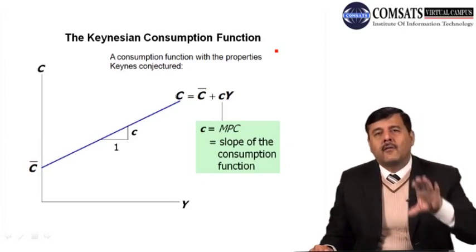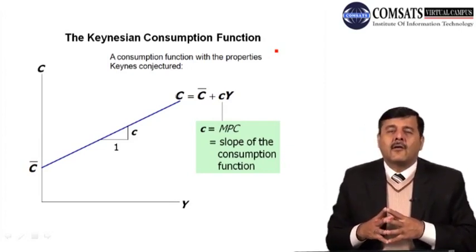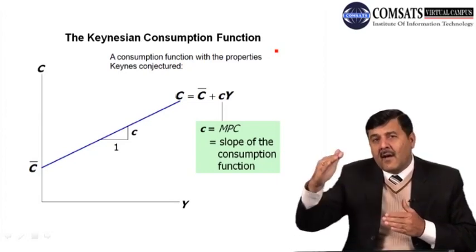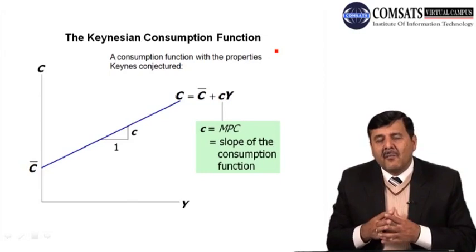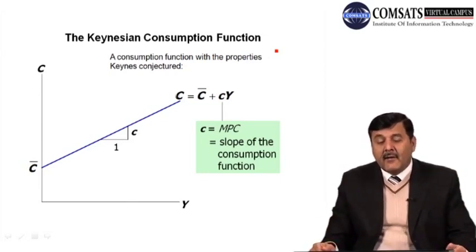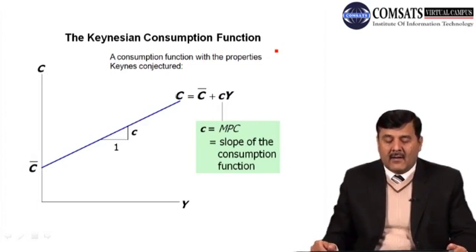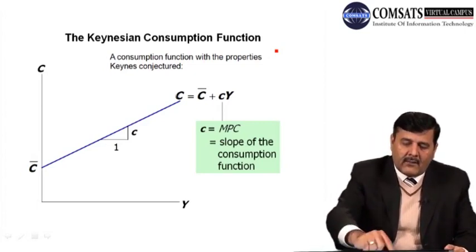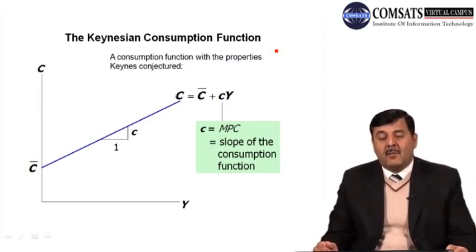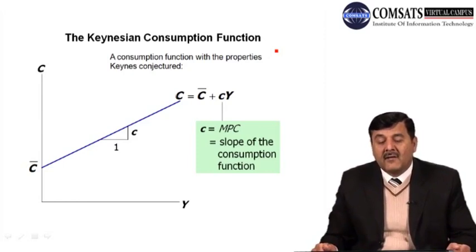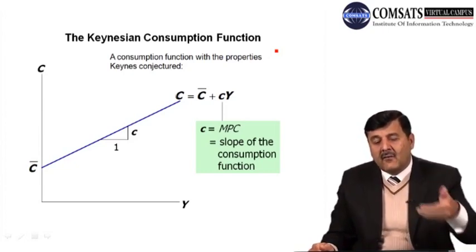The positively sloped consumption line shows a direct relationship between consumption and income — when income goes up, consumption also goes up. However, according to Keynes, the change in consumption will be less than the change in income. The slope of this curve is ΔC/ΔY, which gives us the marginal propensity to consume. This is known as Keynes' psychological law of consumption.